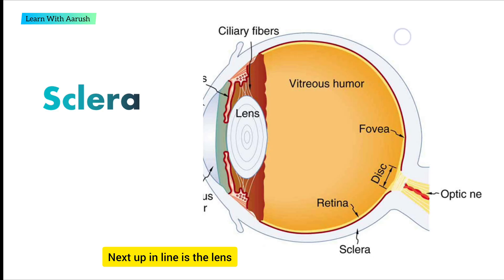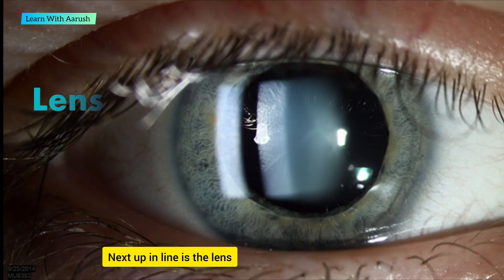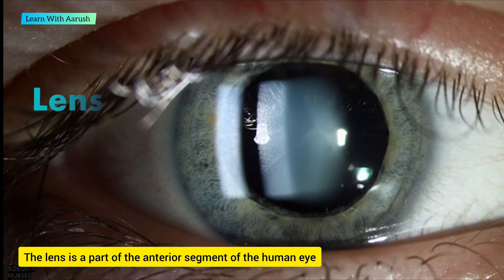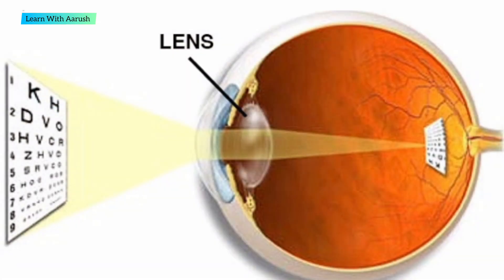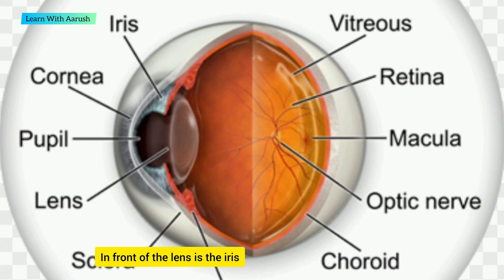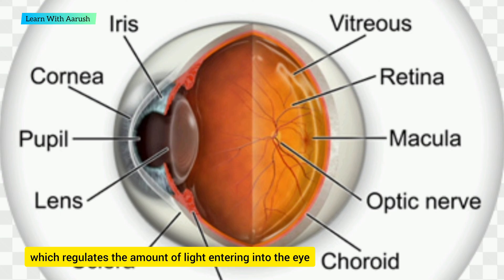Next up in line is the lens. The lens is a part of the anterior segment of the human eye. In front of the lens is the iris, which regulates the amount of light entering into the eye.